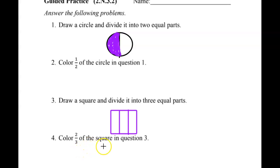Color two-thirds of the square in question three. Two-thirds of them. So how many will you color? Pause it and color in what you need to color. So you should only have two of the three colored in. Is that how you did yours? If so, you did it perfect.